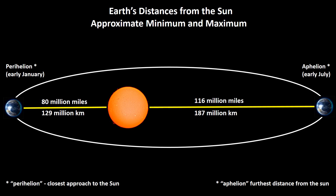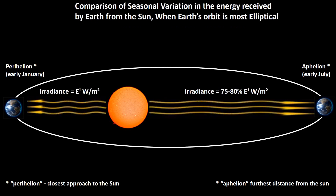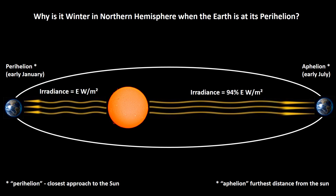When the orbit is at its most eccentric, the separating distance when we are closest to the Sun is approximately 80 million miles, or 129 million kilometers. And when we are furthest from the Sun, the separating distance is roughly 116 million miles, or 187 million kilometers. This translates into a difference in the total solar irradiance of between 20 to 25%. The eccentricity of the Earth's orbit evidently causes changes to the total solar irradiance over long periods of time, but its effect becomes more marked when taken in combination with the other two factors making up the Milankovitch cycles.